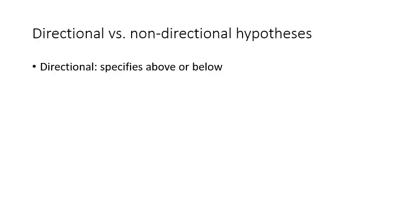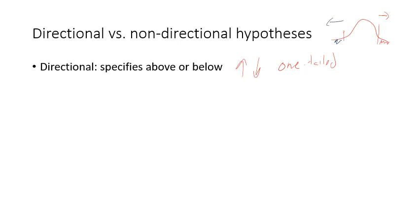When doing hypothesis testing we've got two types. Directional testing specifies either greater than or less than — a specific directional difference — and this is also called one-tailed. Why? Because if you've got our distribution and we're looking to see if something is greater than, we're looking to see if it falls in one tail. Or if we're looking at less than, we're looking at the other tail. So it is one-tailed.